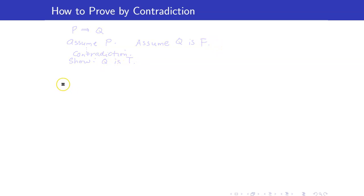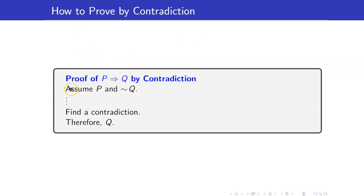To summarize, here are the steps of proving something by contradiction: assume the premise P and the negation of your conclusion, then find the contradiction, and then at the end conclude that Q must be true. Proof by contradiction is an indirect proof. So therefore, just like proofs by contrapositive, you have to also tell your audience that you will be proving by contradiction.